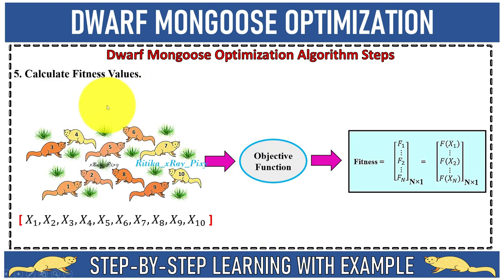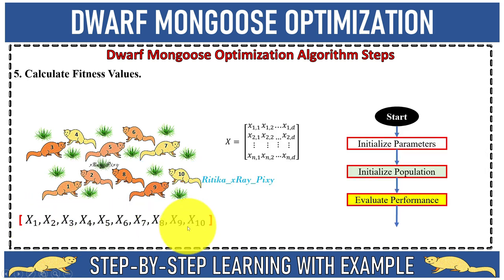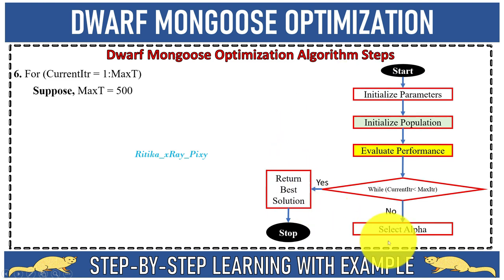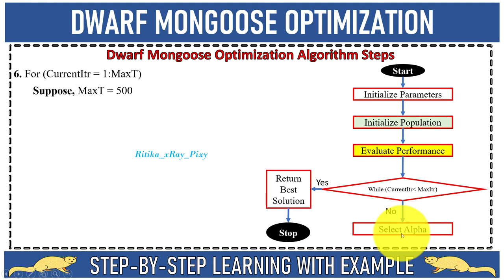Next we calculate the fitness value for each agent in the population. After initializing positions, we evaluate their performance by calculating the fitness value for each agent using the objective function. We then check the stopping condition. For example, with 500 total iterations, the loop repeats 500 times and then displays the best solution. If the stopping condition is not met, we go to the next step; otherwise we display the best solution.